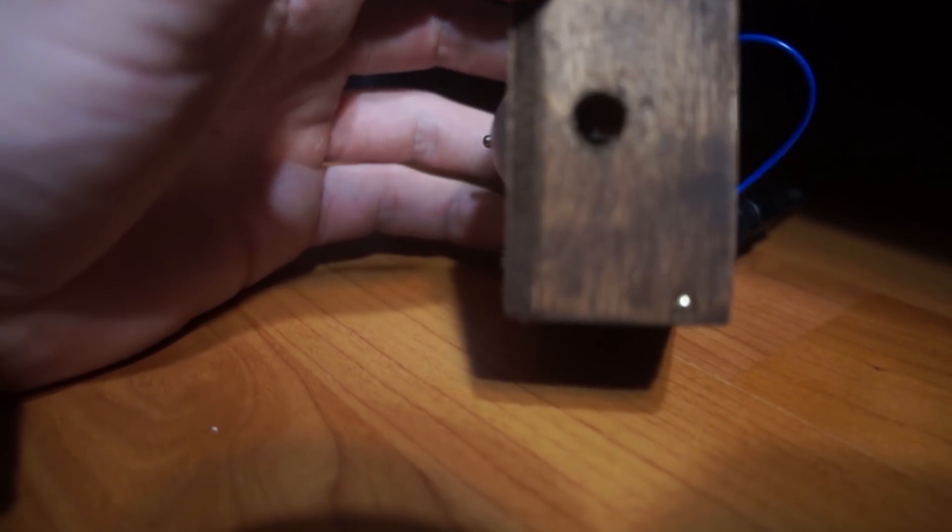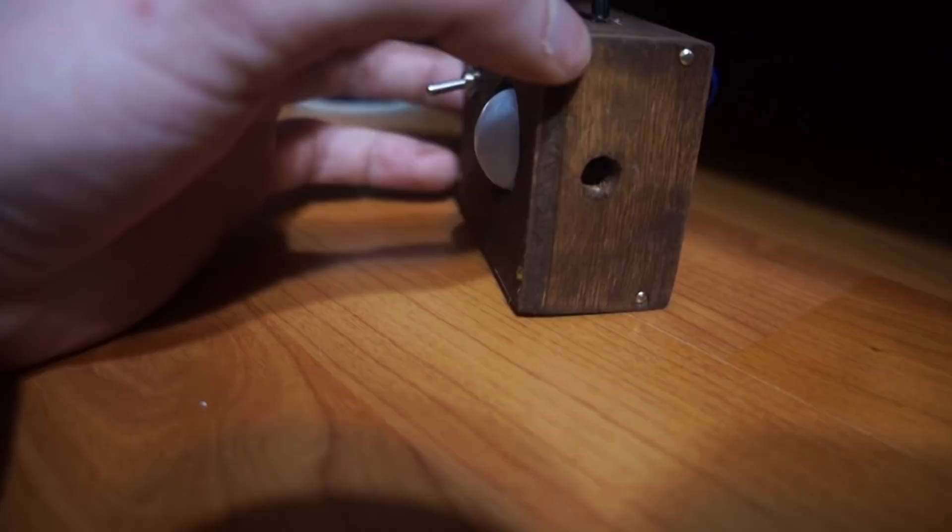Now I'm going to flip the switch on and here you can see the lights come on when it senses motion. Obviously that was too short, so I've drilled another hole so I could see the time delay knob and I'm going to turn that so that it lengthens the delay time.